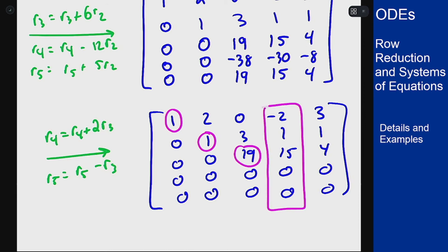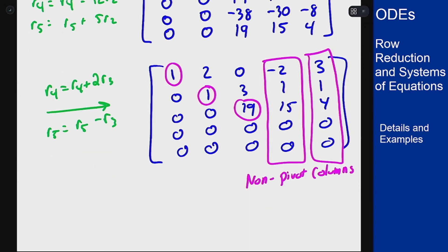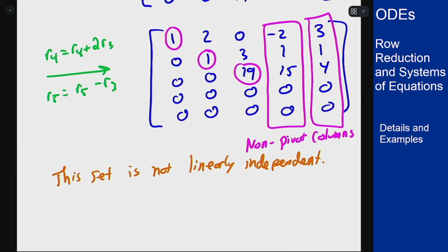Which means these two are non-pivot columns. What this means is that I could write those two columns as a linear combination of the other three. Meaning that this set is not linearly independent. They give me free variables, I can write them as combinations of the other variables. All of that means these are not a linearly independent set.